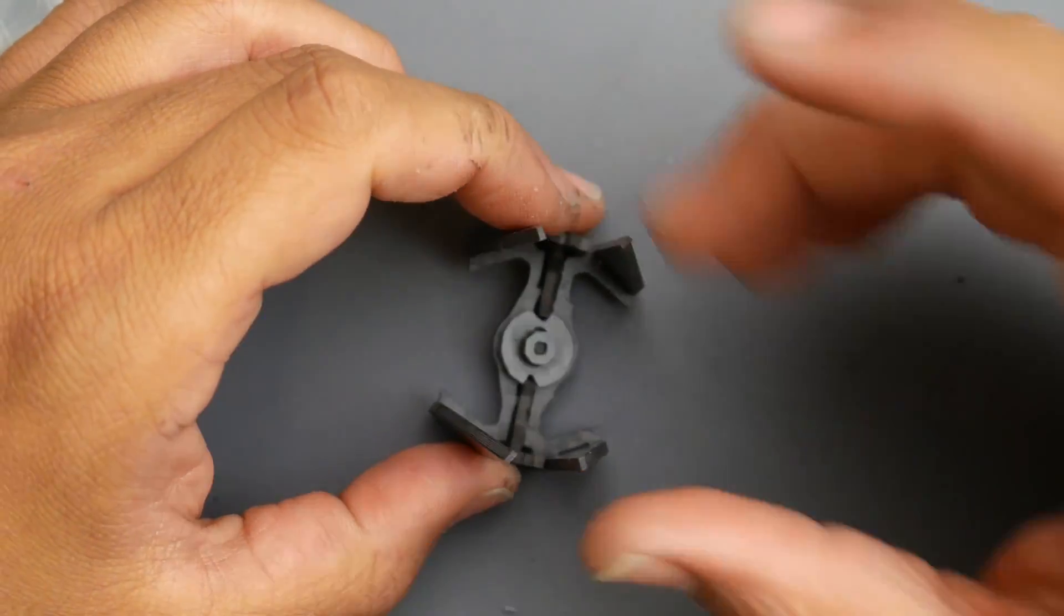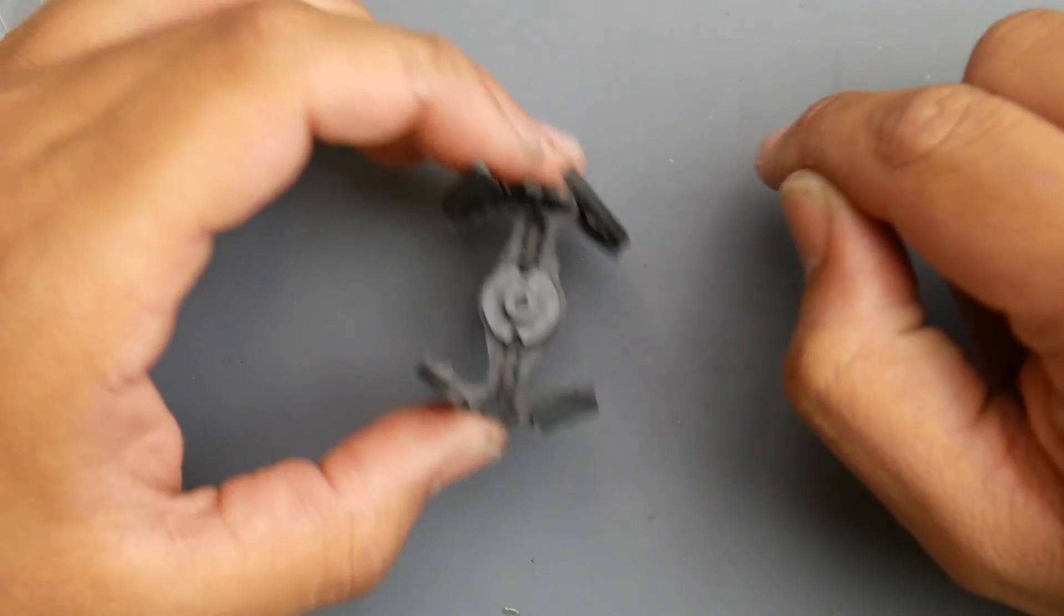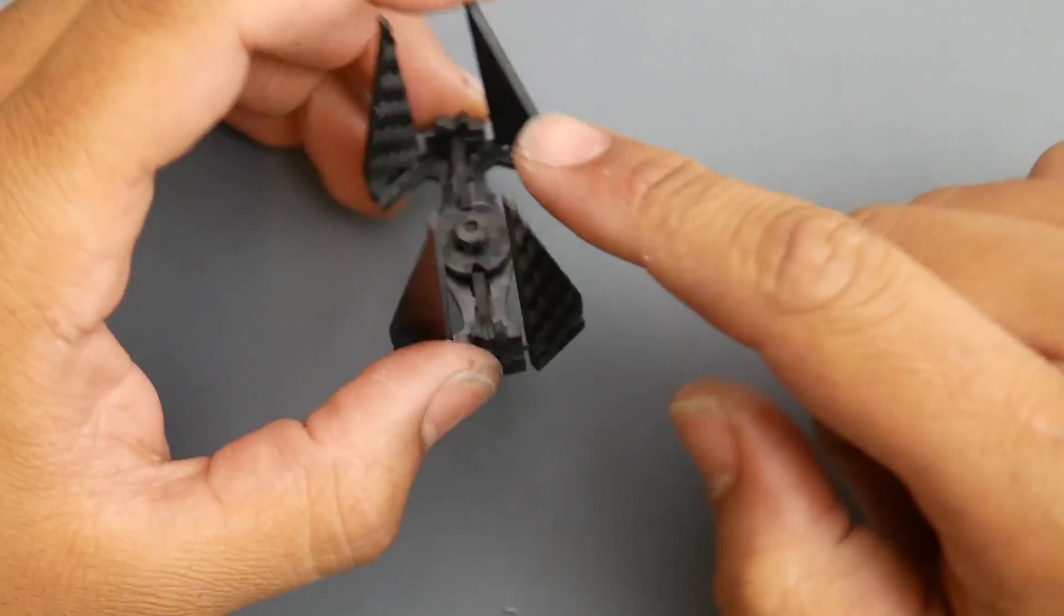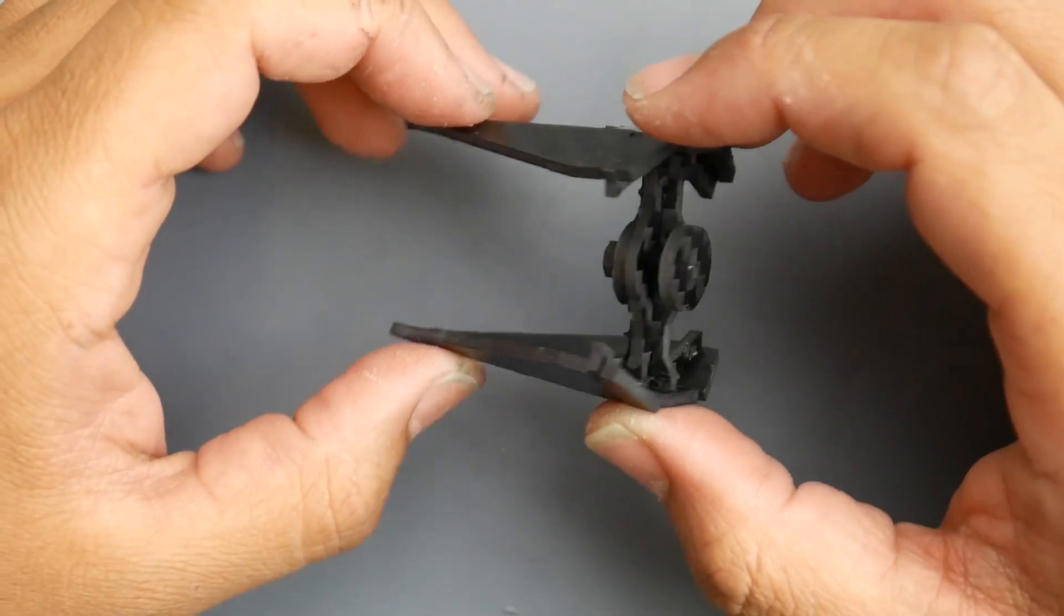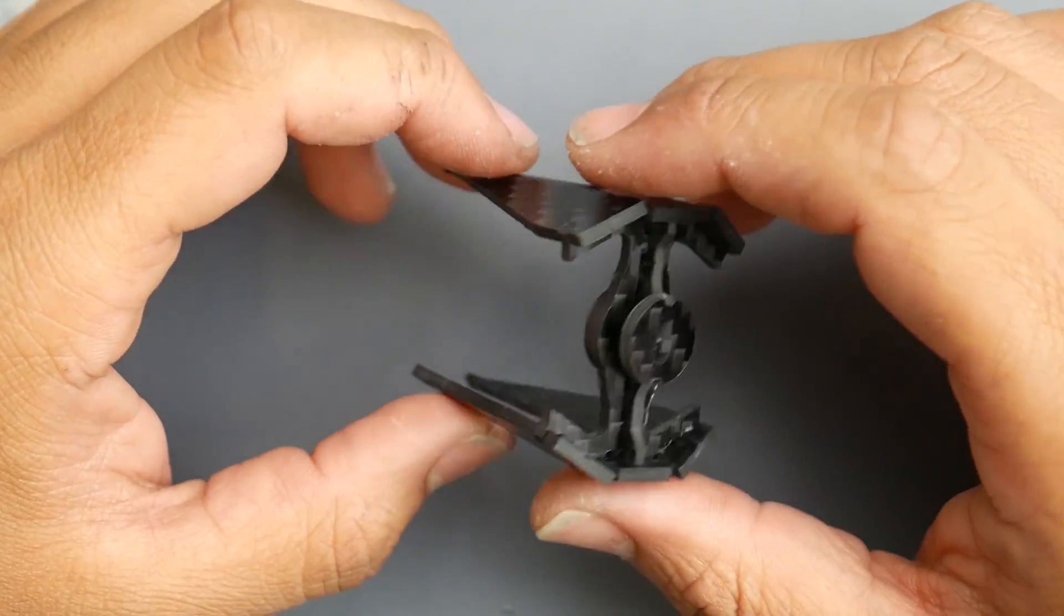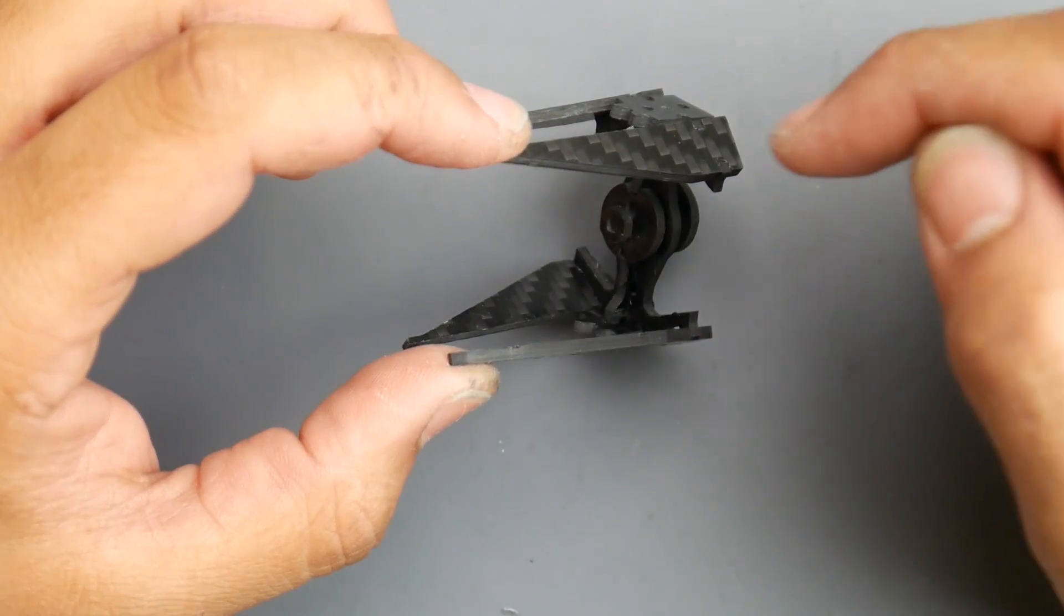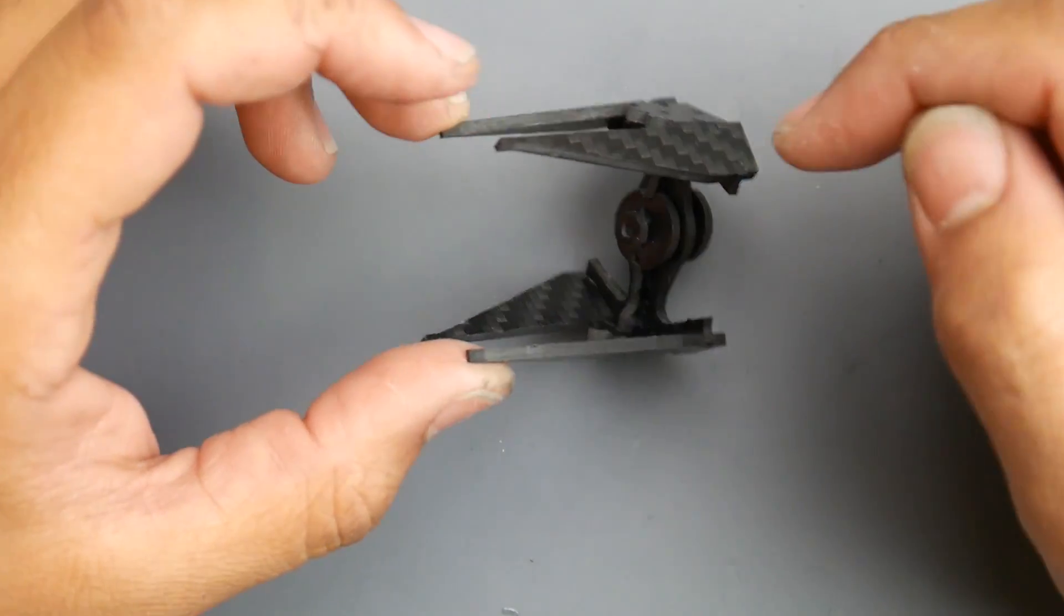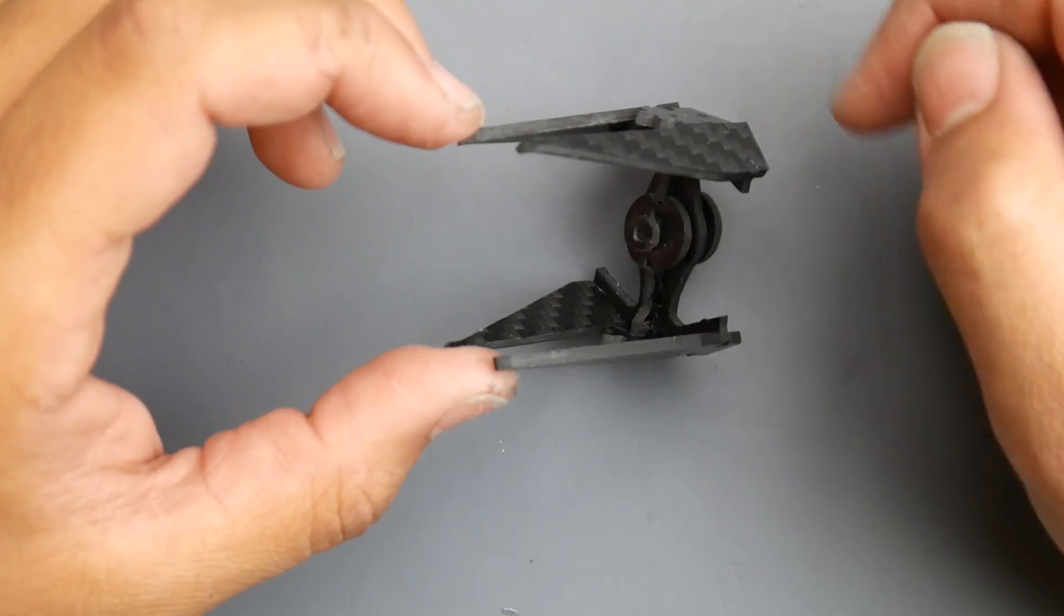For the settings I used: I used 70 millimeters per minute plunge rate and then I also used 140 millimeters per minute feed rate which it goes around. I used 20,000 RPM and I've also used 0.4 millimeters every pass, so it goes down 0.4 millimeters and then it goes down again 0.4 millimeters.